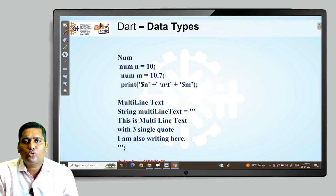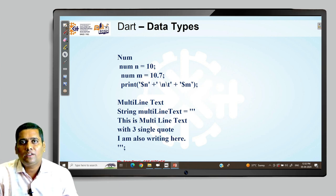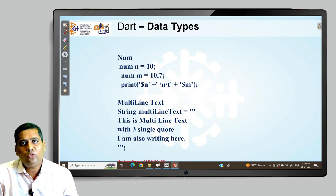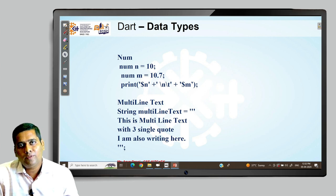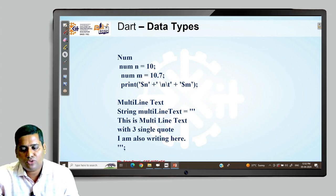For working with numbers, we have integer or double. One addition in Dart is the num type — you can store any integer or double value in a num variable. It is a type you can use when you want to store either integer or double data. Multiline text is also available in Dart; to write a multiline string, enclose it in three single quotes, and you can write multiple lines within those quotes.